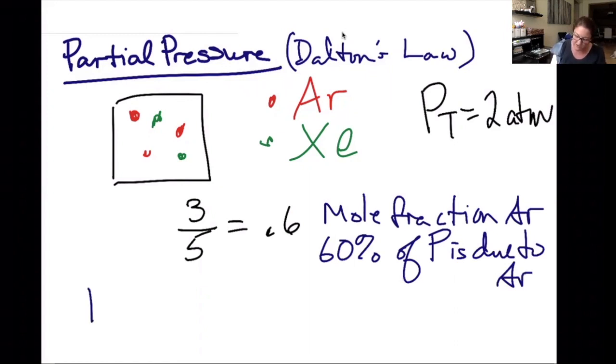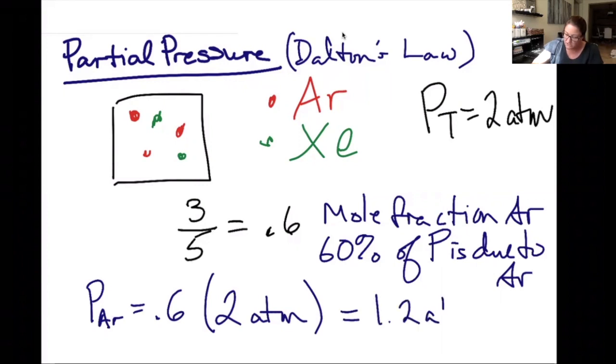So if I want to find what's called the partial pressure of argon, I'm going to take that mole fraction, which is 0.6, and multiply by the total pressure of 2 atm. 0.6 times 2 atm gives me 1.2 atm.